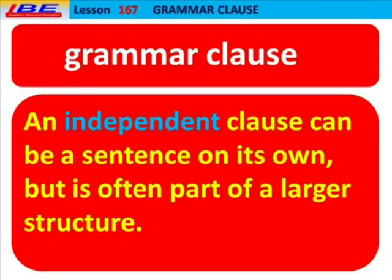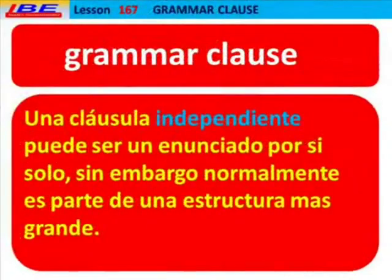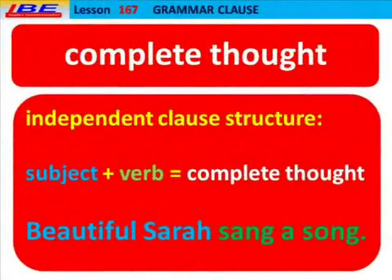An independent clause can be a sentence on its own, but is often part of a larger structure. Independent Clause Structure: Subject plus Verb equals a Complete Thought. For example: Beautiful Sarah sang a song.